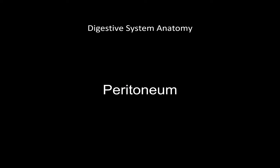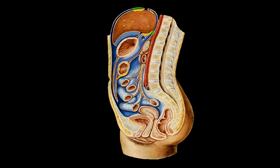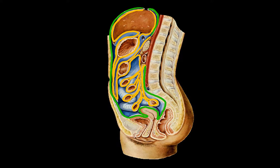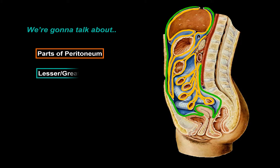Hey, what's up? Merite here. In this video, we're going to go through the anatomy of the peritoneum, which is a serous membrane that lines the inside of the abdominal wall as well as surrounding various organs inside the abdominal cavity. We're first going to go through the parts of the peritoneum, then the lesser and greater omentum and the mesentery, and after that the different structures found in the peritoneal cavity.